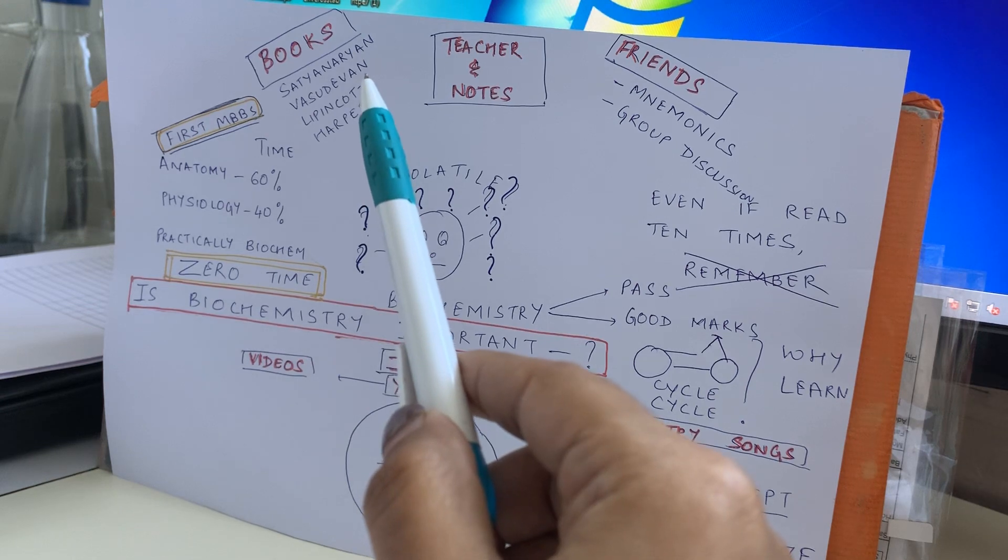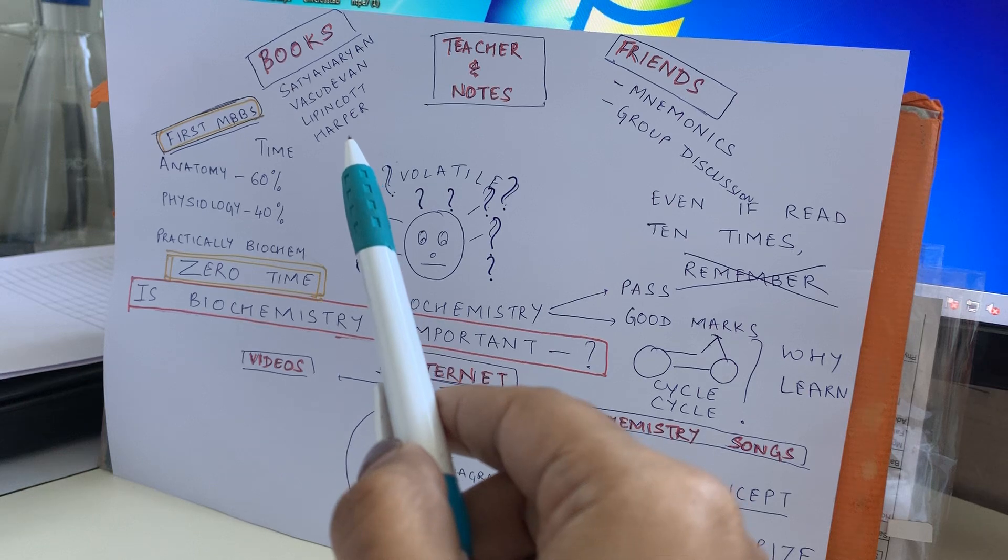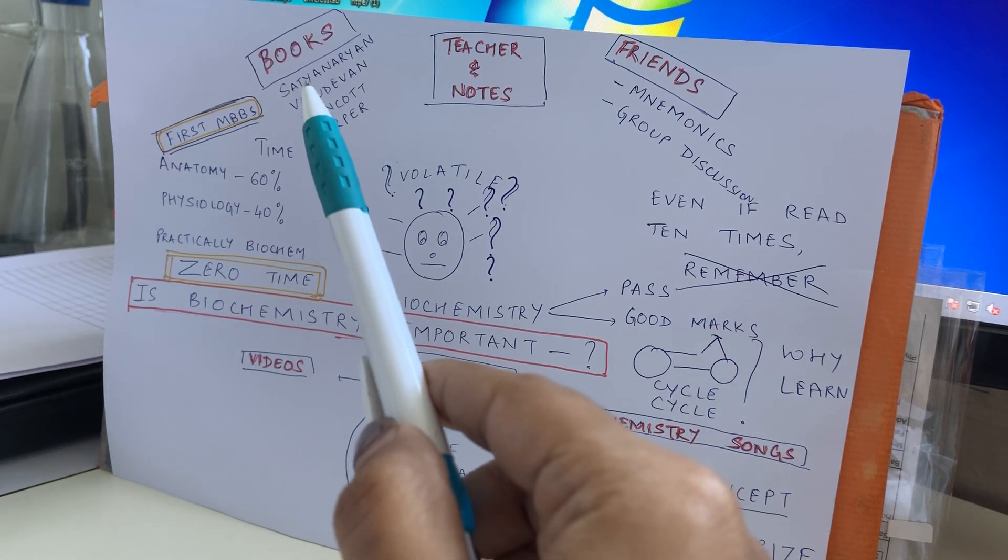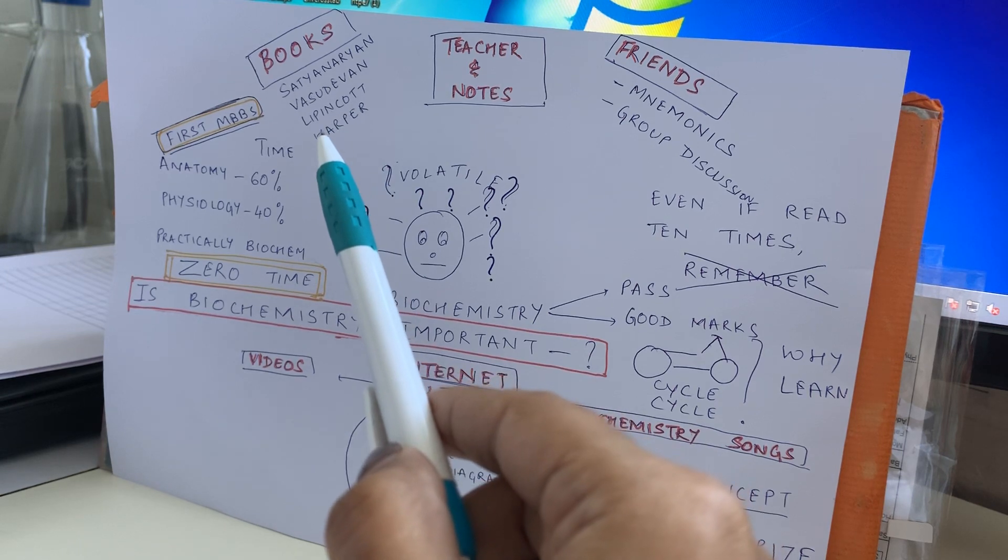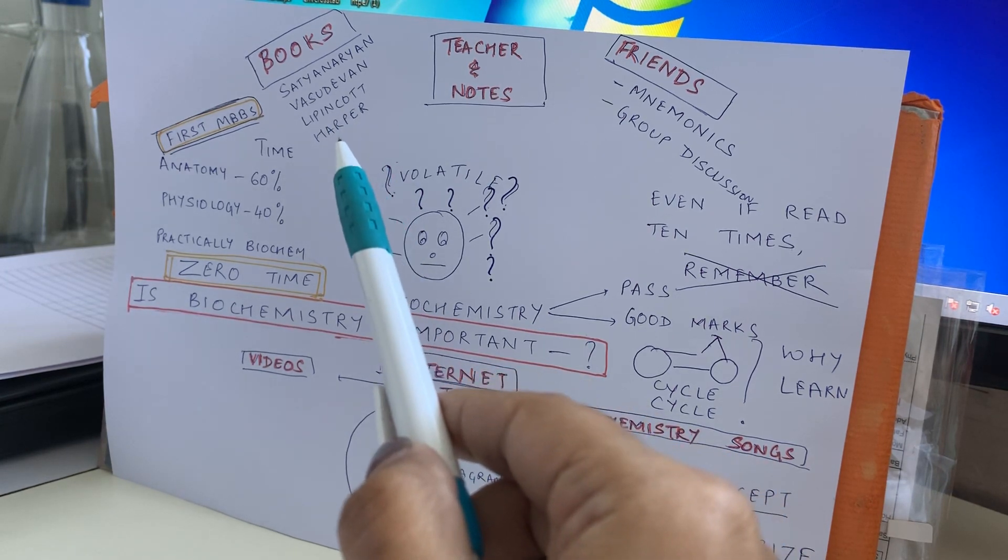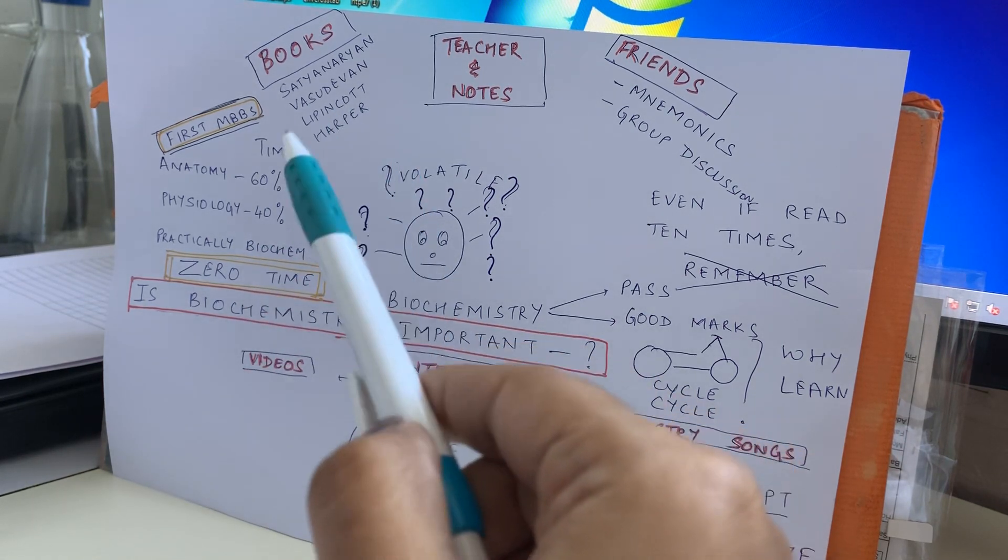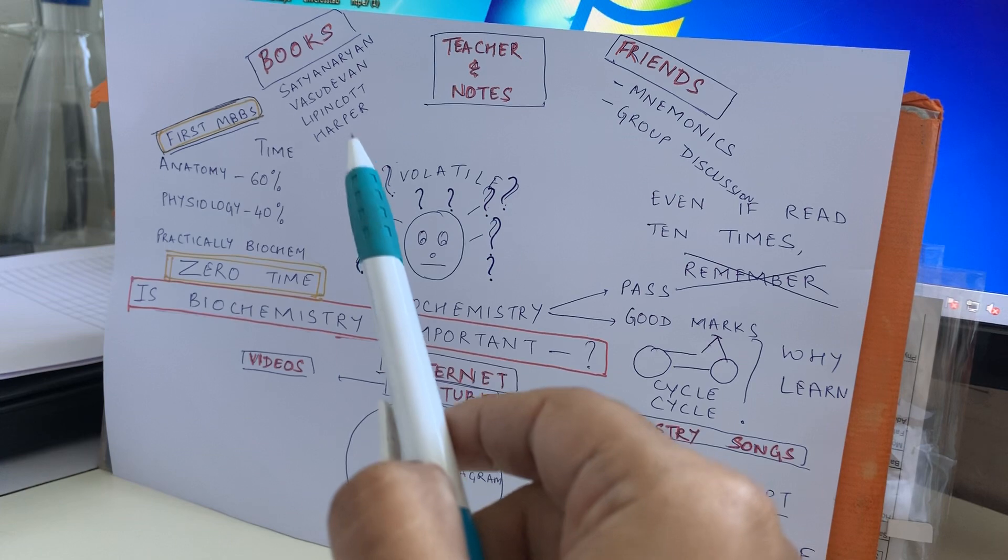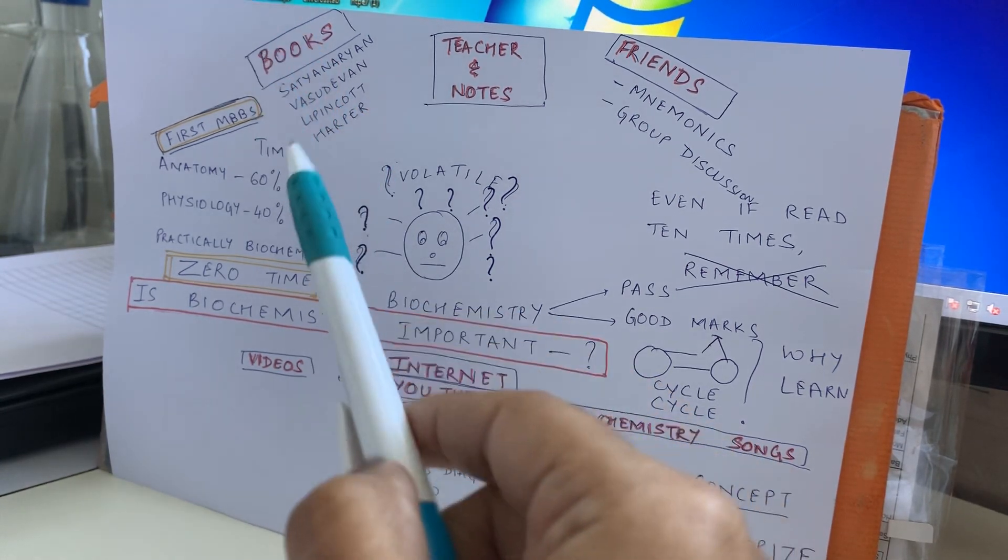Vasudevan I haven't read so much. Lippincott and Harper are the books that I have read afterwards in postgrad, but not in undergraduate. If you are doing Lippincott, it is good because the cycles have been explained well, but it does not cover the entire biochemistry. If you are reading Harper, I'll tell you, you don't have time, so please just see how to manage time properly. These are the things - basically you will have books but you will not read.